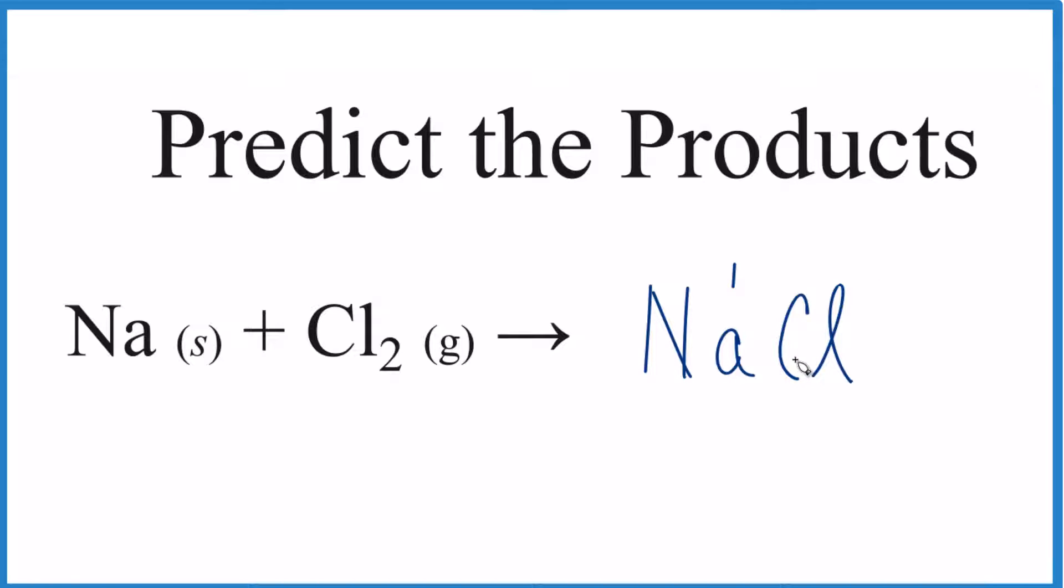So NaCl, that is correct. NaCl is probably going to be a solid since it's an ionic compound. And that's really it. We've predicted the products. This equation isn't balanced because we have two chlorines here and one here.